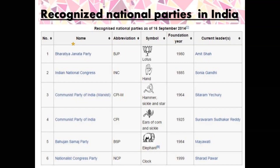The fifth is Bahujan Samajwadi Party, led by Mayawati. The sixth is Nationalist Congress Party, NCP, presently led by Sharad Pawar in Maharashtra. And the seventh party is AITMC, All India Trinamool Congress, presently led by Mamata Banerjee.